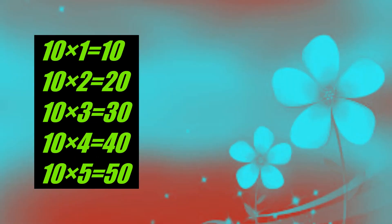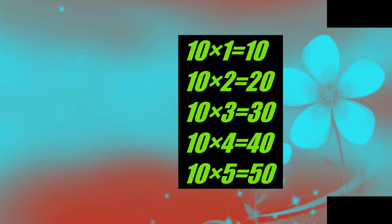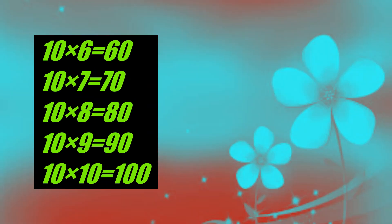Ten one's a ten, ten two's a twenty, ten three's a thirty, ten four's a forty, ten five's a fifty, ten six's a sixty, ten seven's a seventy, ten eight's a eighty, ten nine's a ninety, ten ten's a hundred.